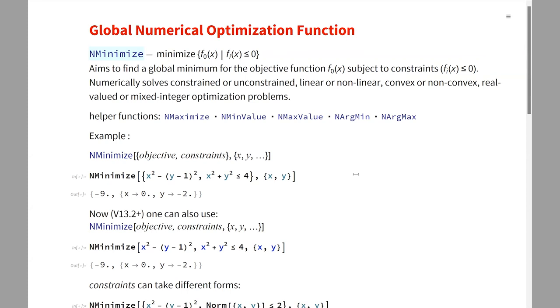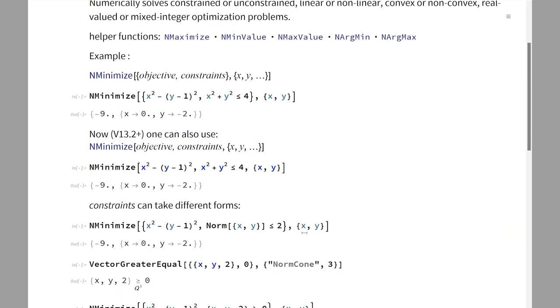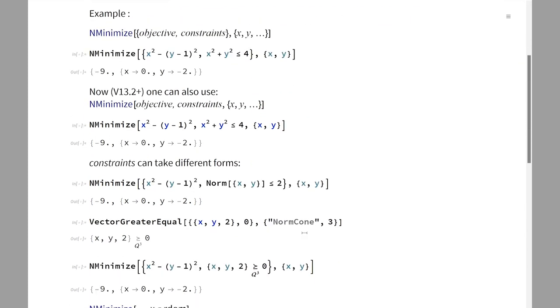Historically, the syntax is that we give the objective and constraints in the first argument, and then the variable specifications in the second argument. Now, since the new version, it will also be possible to give the objective and constraints into separate arguments so that we are more consistent with the new optimization functions.